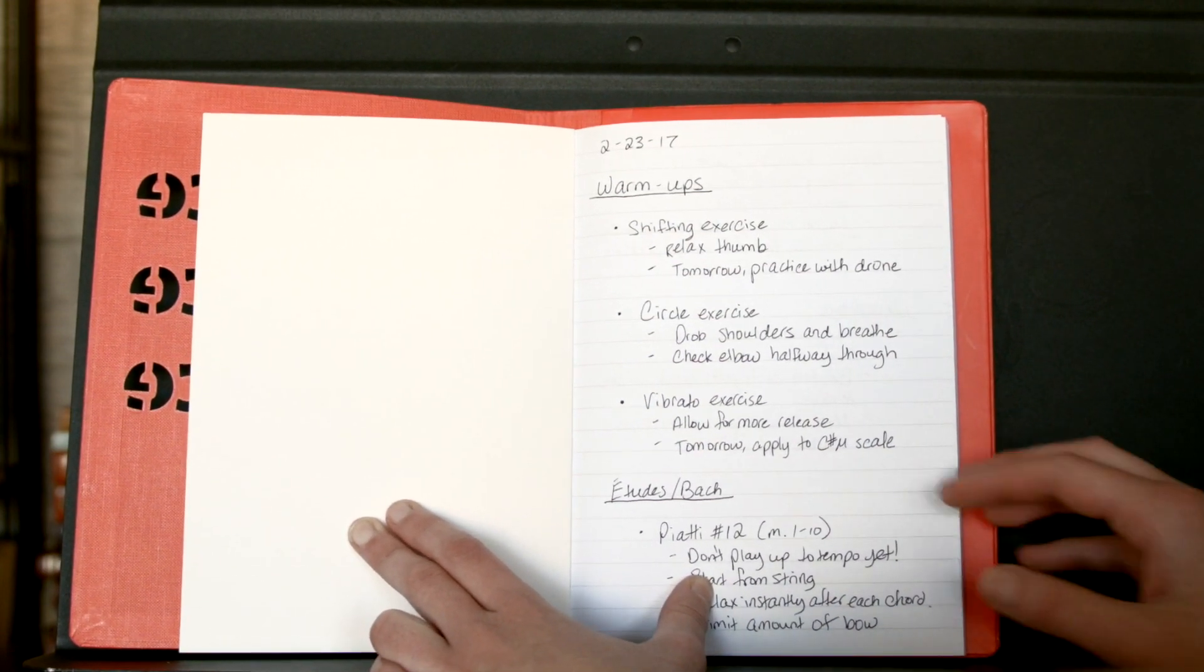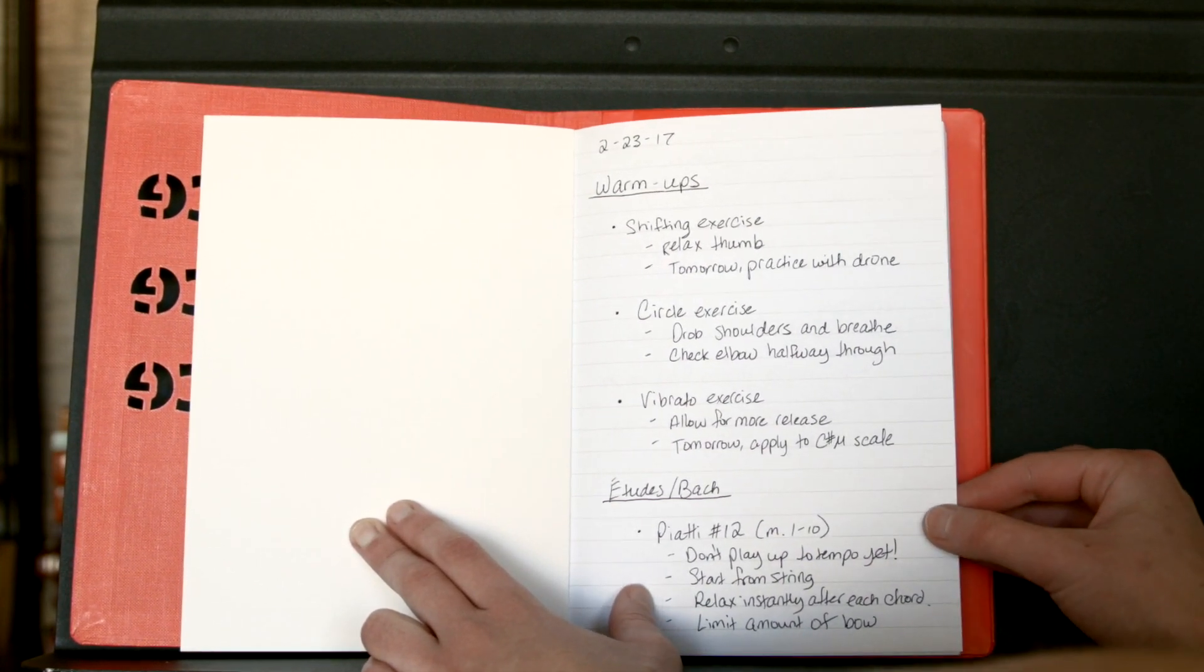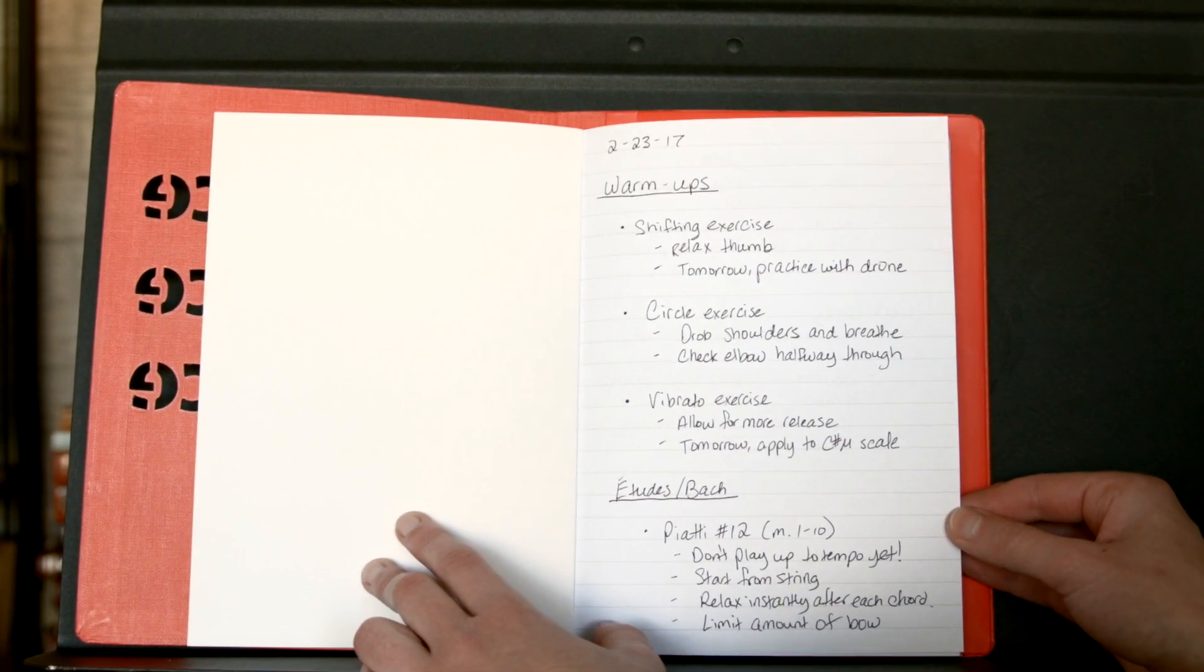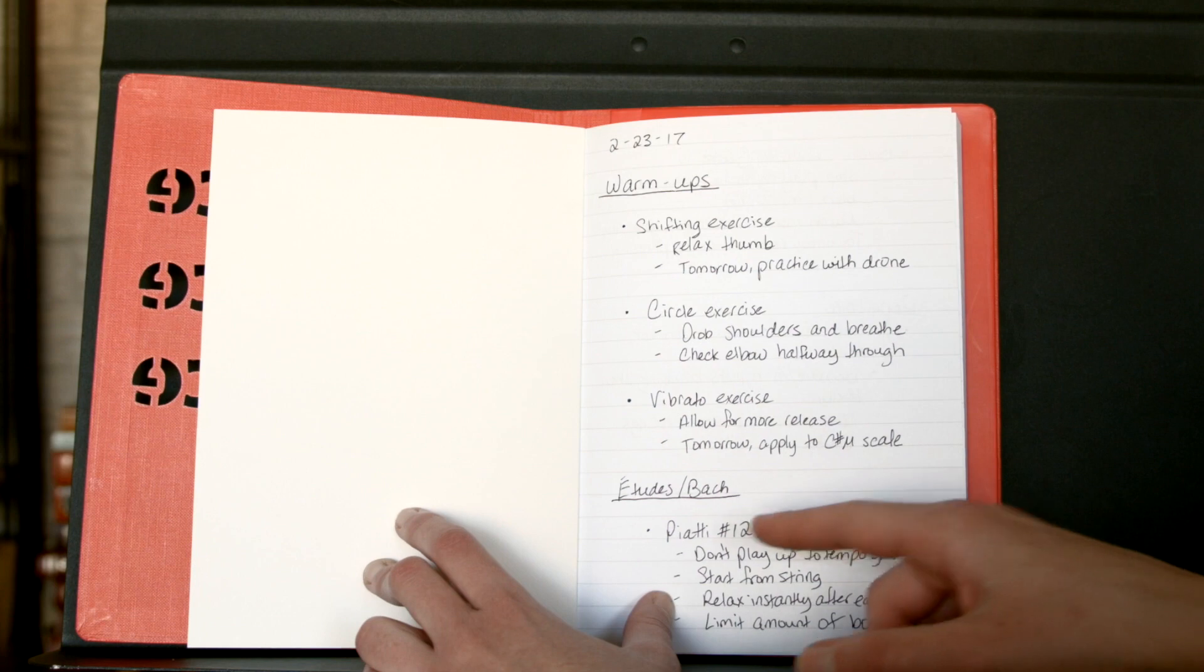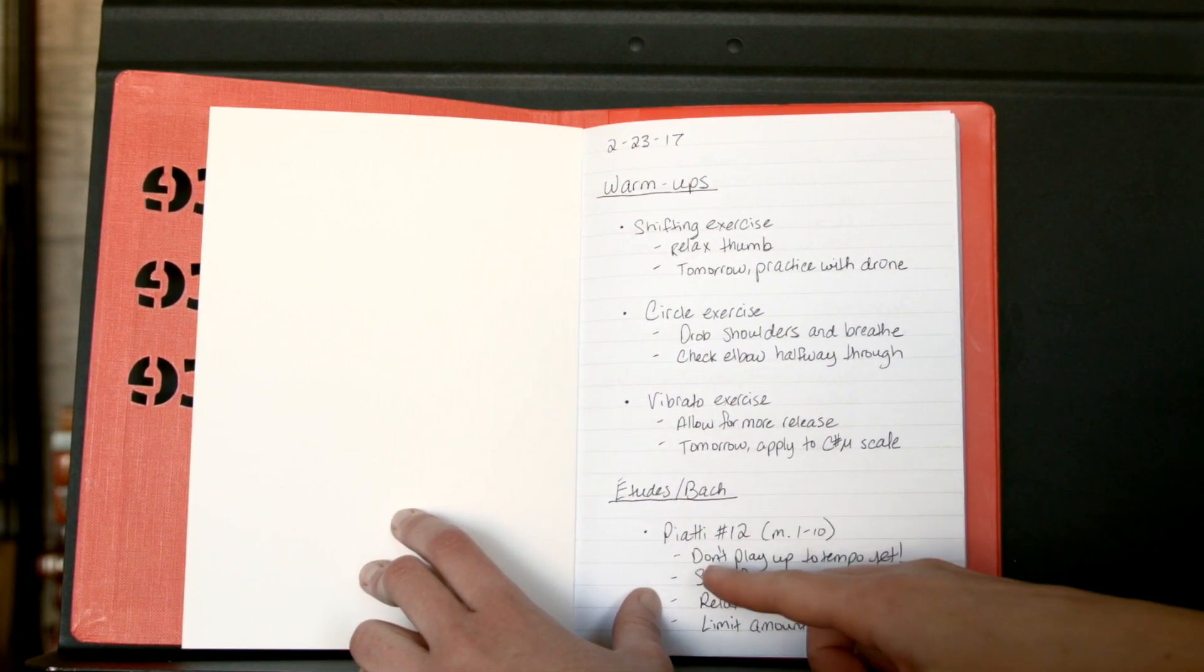And some of these things you may not understand—probably not many people would understand my notes—but they make sense to me. So whatever you have to write down to understand what you mean, that's what's important. In my second section, my etude—right now technically it's a caprice, but I treat it like an etude—so Piatti Number 12.